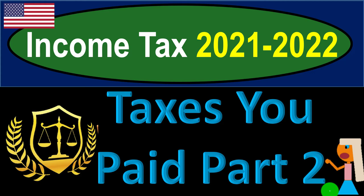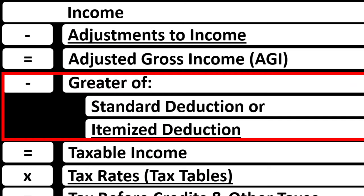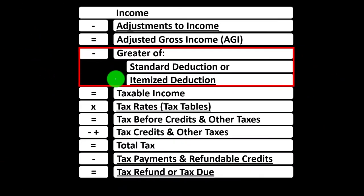Income Tax 2021-2022, Taxes You Paid Part 2. Get ready to get refunds to the max, diving into Income Tax 2021-2022. Most of this information can be found in the Schedule A Instructions for Tax Year 2021 on the IRS website at irs.gov. Looking at the income tax formula focused on itemized deductions, keeping them distinct in our mind from the adjustments to income — the above-the-line deductions, the deductions for adjusted gross income, the Schedule 1 deductions. Anytime we think about itemized deductions, we're comparing and contrasting them to the standard deductions to see which is larger, taking the one which is larger.